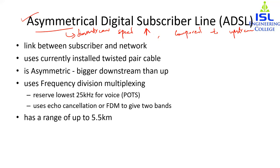DSL is used in the implementation of a high-speed wide area public digital network. The most challenging part is the link between the subscriber and the network. If we have billions of subscribers on a single network, we cannot have a new cable for each subscriber. Instead, we use the already installed wires — the links that were installed to carry voice signals — which are capable of transmitting signals of up to one megahertz.